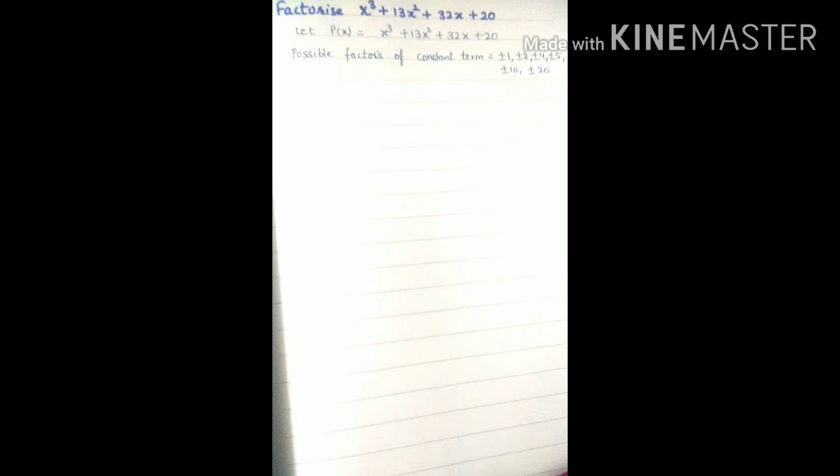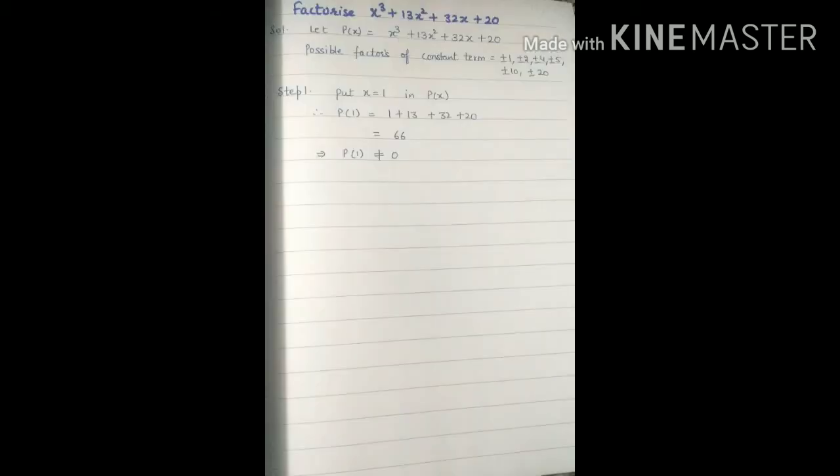Possible factors of constant term 20 are ±1, ±2, ±4, ±5, ±10, and ±20. Now we will do it in three steps. Step one: we will put one by one from these factors in the given polynomial until we get one zero.